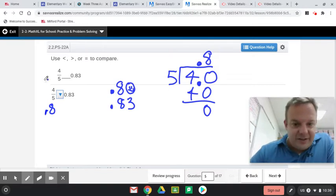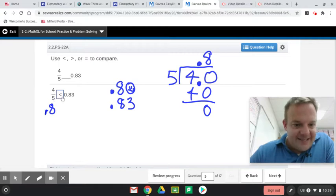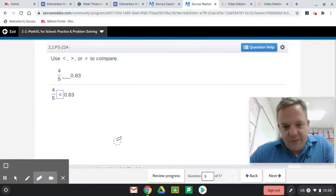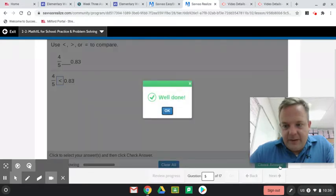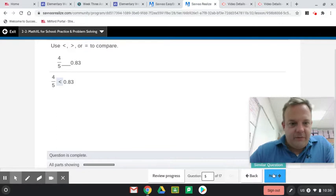But it's nice to think in terms of money. So obviously, the 8,300s is greater. So what this says is 4 fifths is less than 8,300. See the alligator eating the 8,300s because it's more. So there we go. Let's see if we're right. Well done.